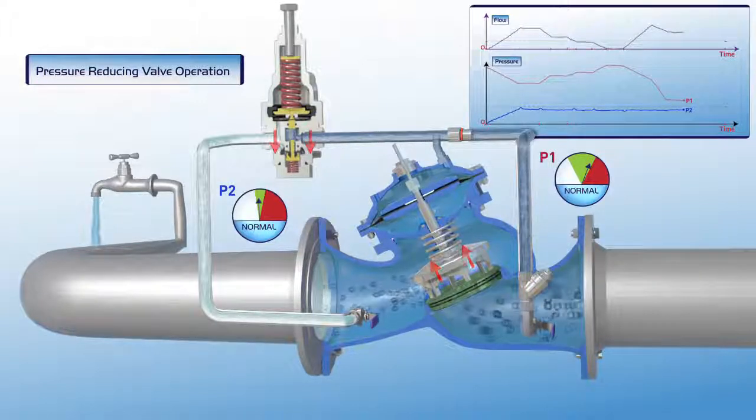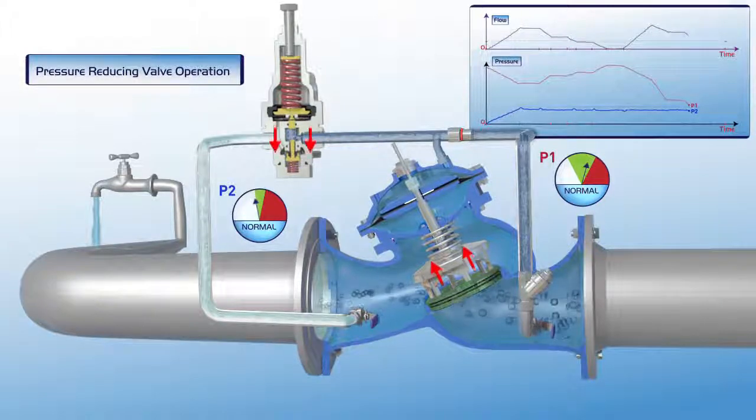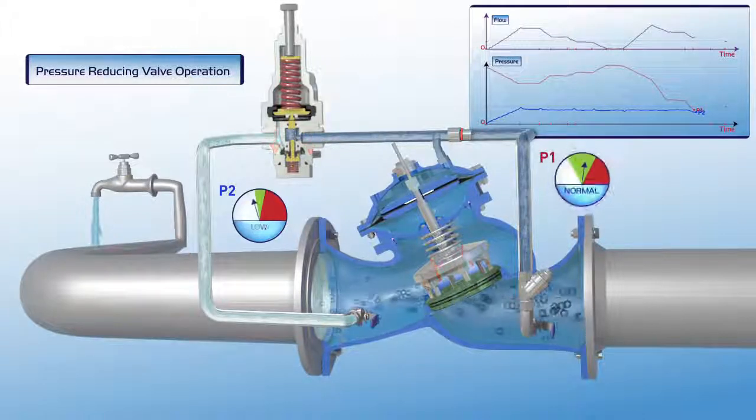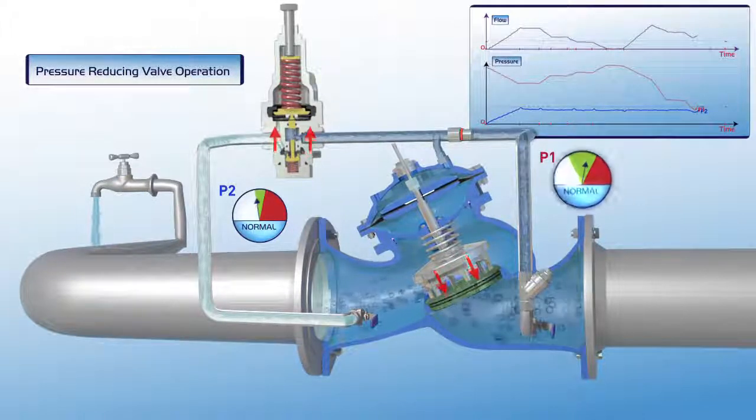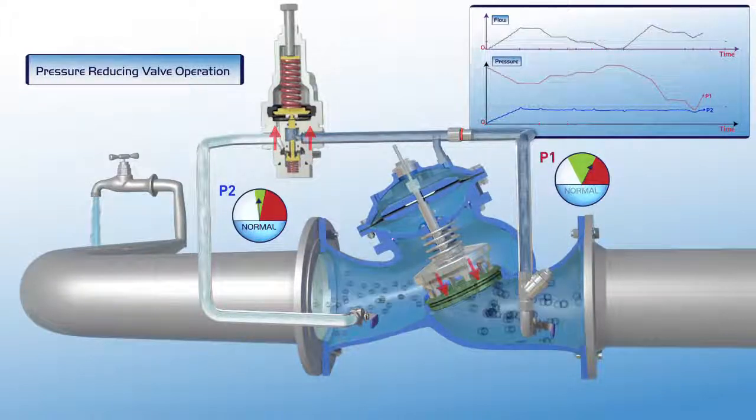In the event of a major drop in upstream pressure, the valve opens fully in order to supply the maximum possible pressure to the consumer pipeline. In this way, the valve ensures continuous water supply, even if pressure is below the desired level.